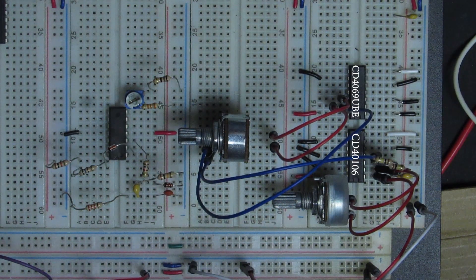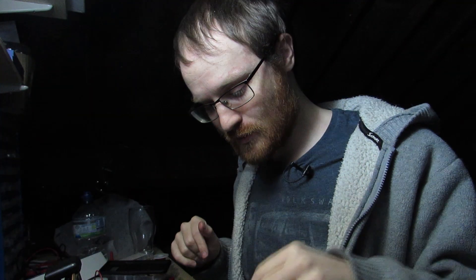Okay, so that should be a unity gain inverting amplifier now. And as I vary the potentiometer, the gain shouldn't change. Good.